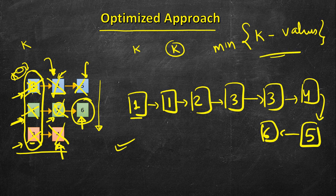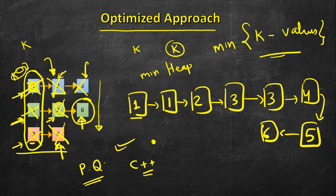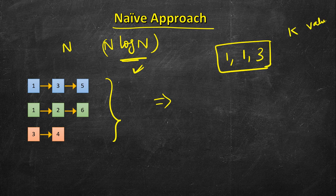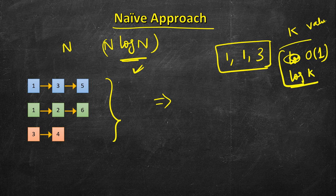A natural way to implement this is using a min heap, because a min heap gives us the minimum among K keys efficiently. We can use built-in constructs like priority queue, available in C++, Java, and Python. We insert the head of all K lists into the priority queue — at any time at most K values are in it. Getting the minimum is O(1) but heapify takes O(log K).